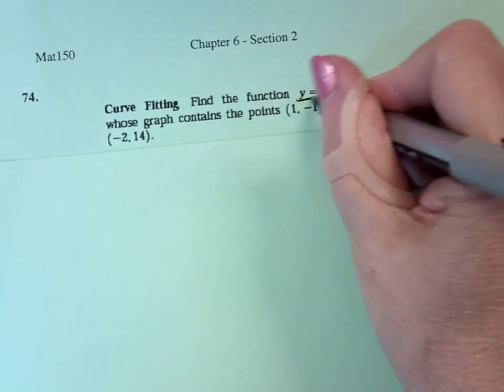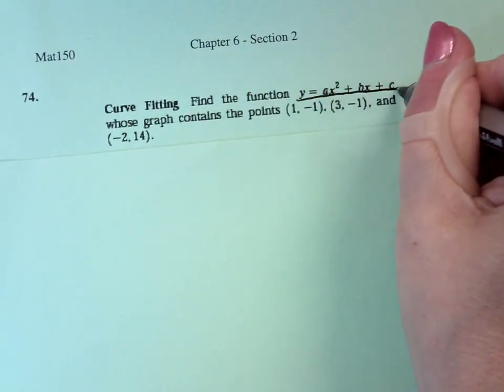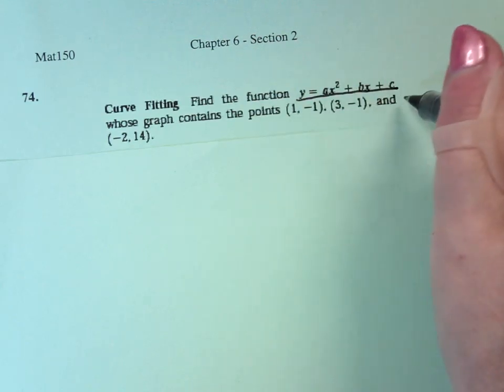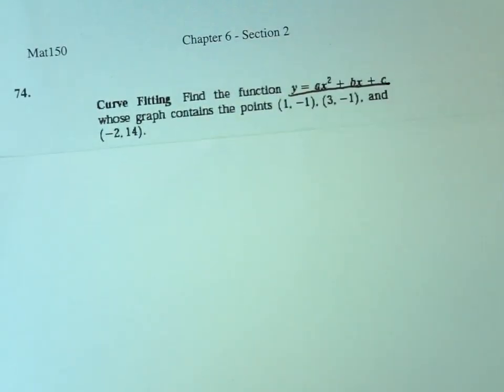Curve fitting. It says find a function y equals ax squared plus bx plus c whose graph contains the fallen coordinate points. Do you know what we're actually doing? We're finding a cubic regression. We're actually doing a quadratic regression.